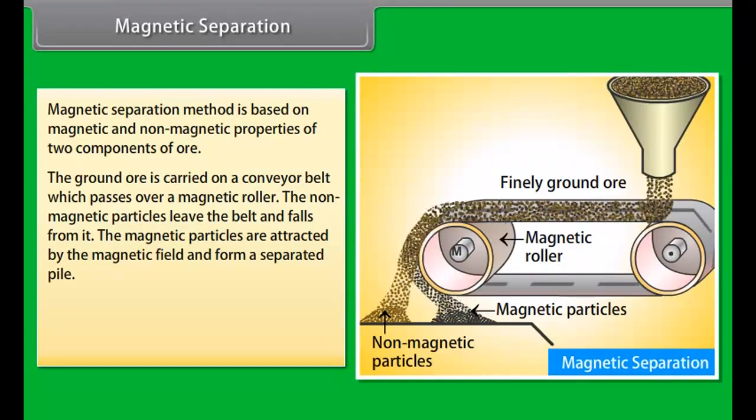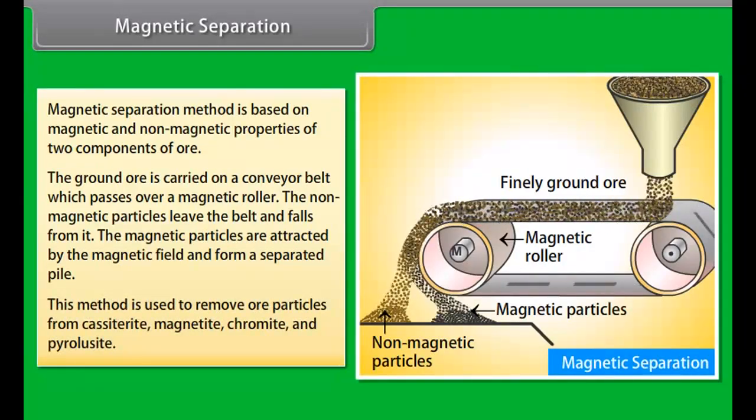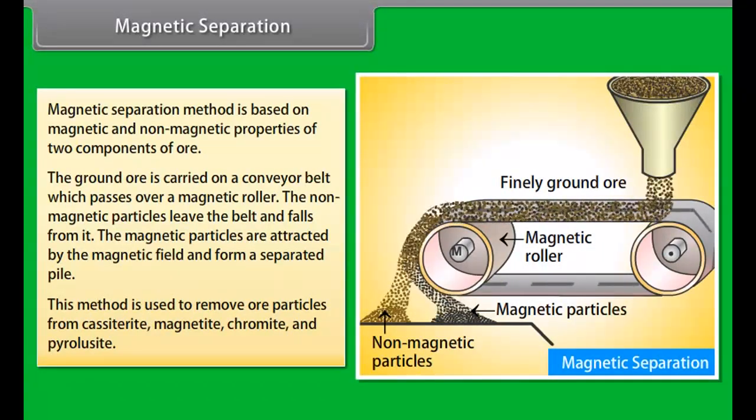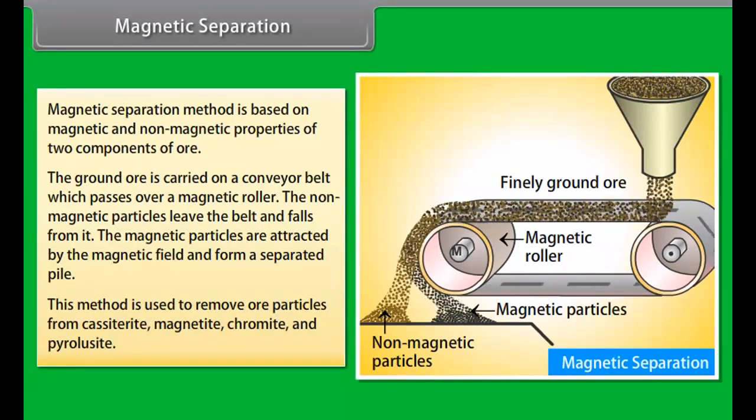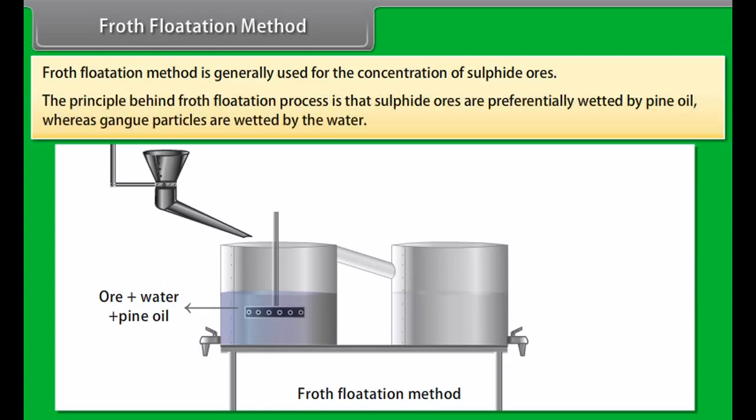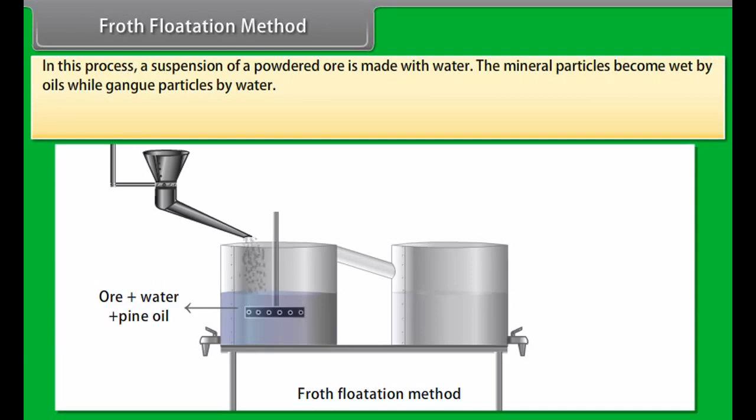Magnetic separation: Magnetic separation method is based on magnetic and non-magnetic properties of two components of ore. The ground ore is carried on a conveyor belt which passes over a magnetic roller. The non-magnetic particles leave the belt and falls from it. The magnetic particles are attracted by the magnetic field and form a separated pile. This method is used to remove ore particles from casitrite, magnetite, chromite and pyroleucite.